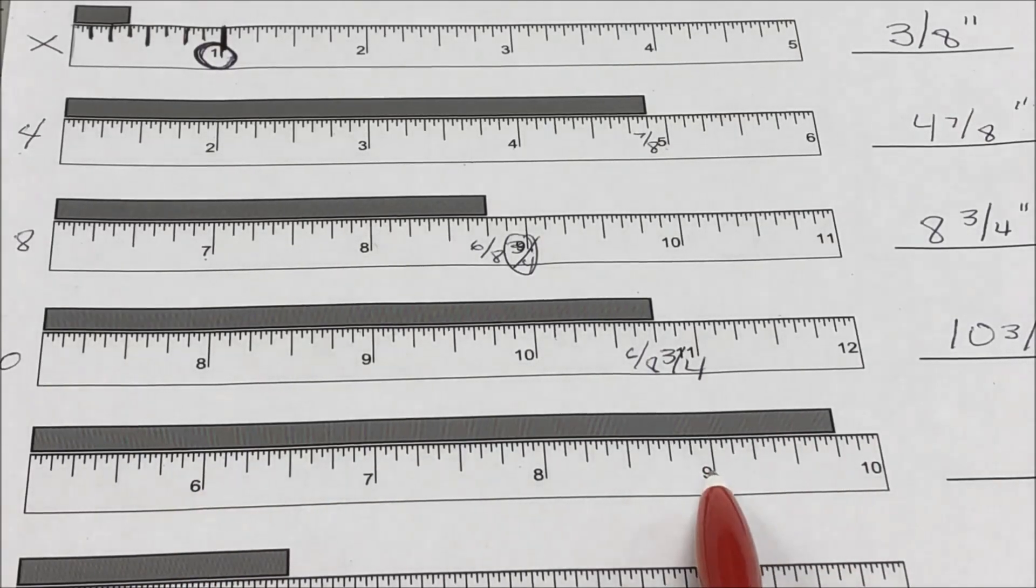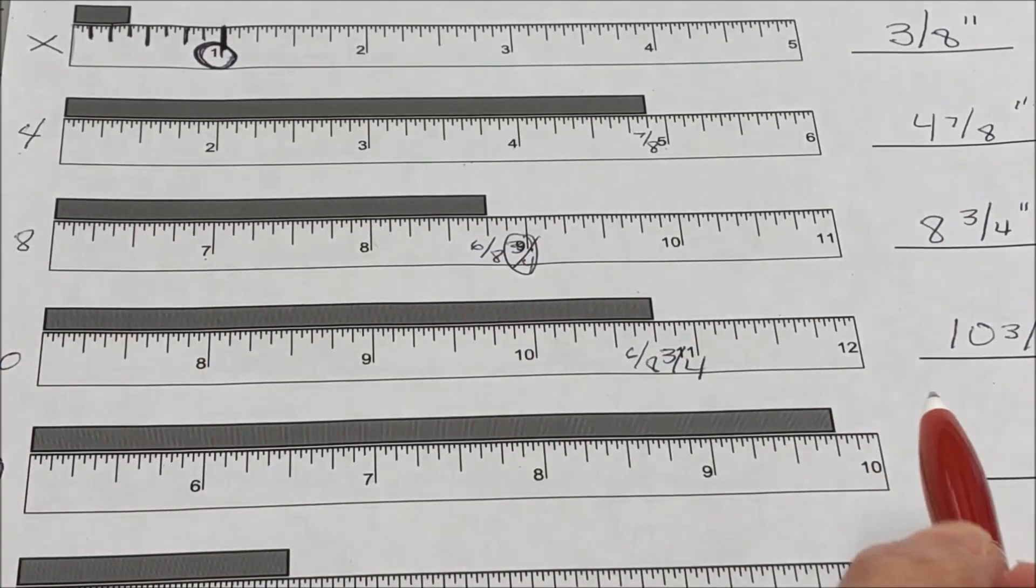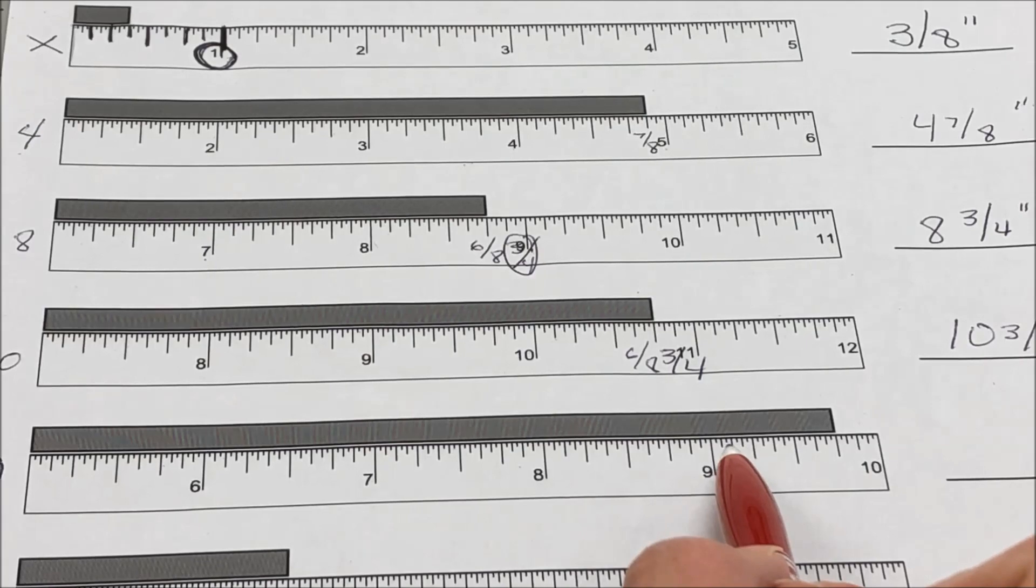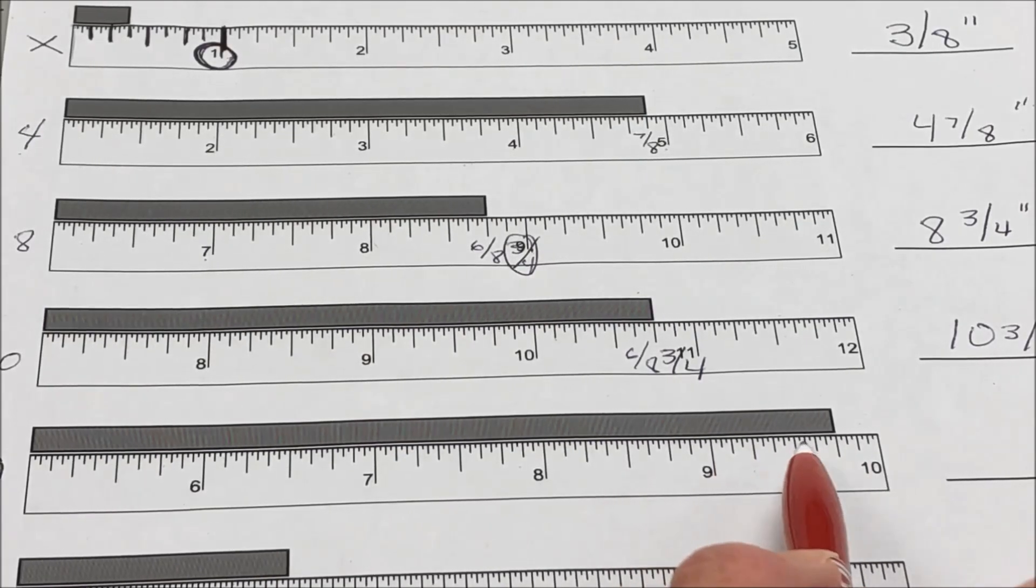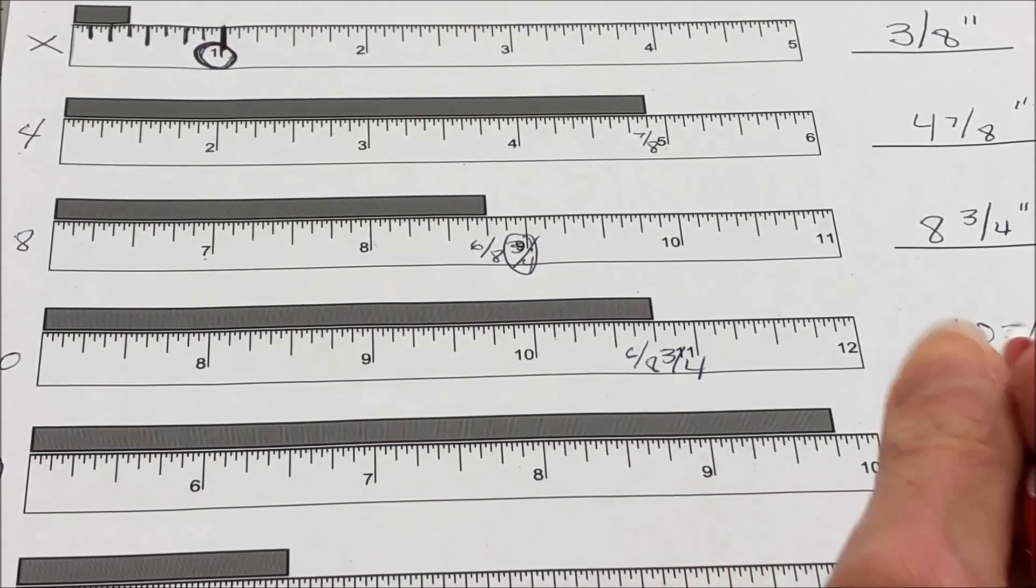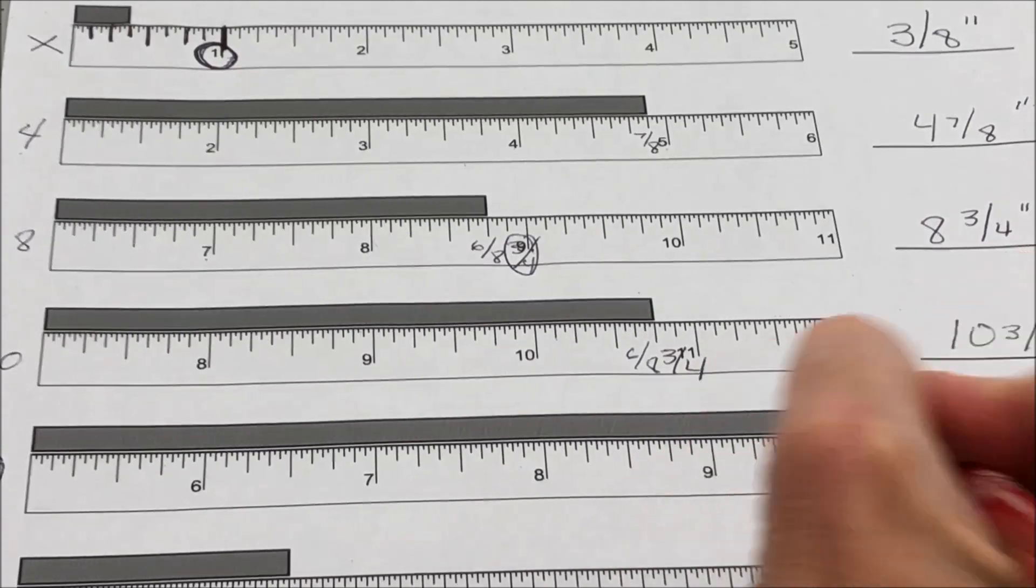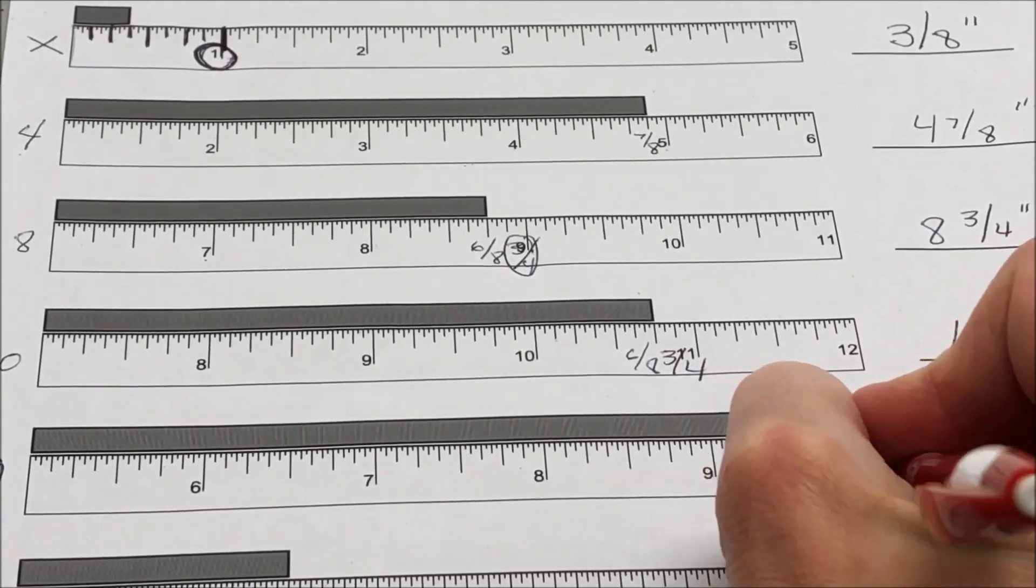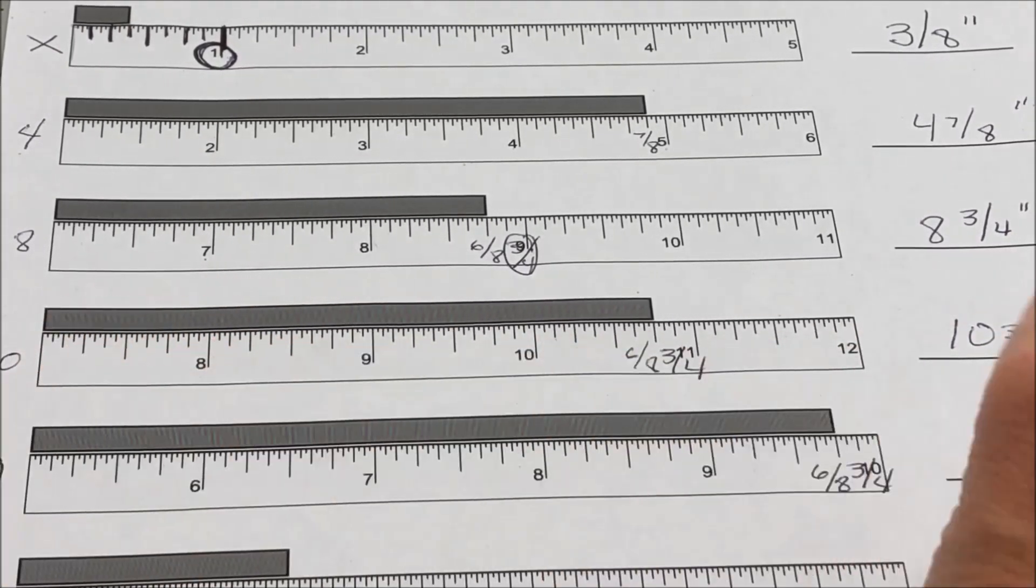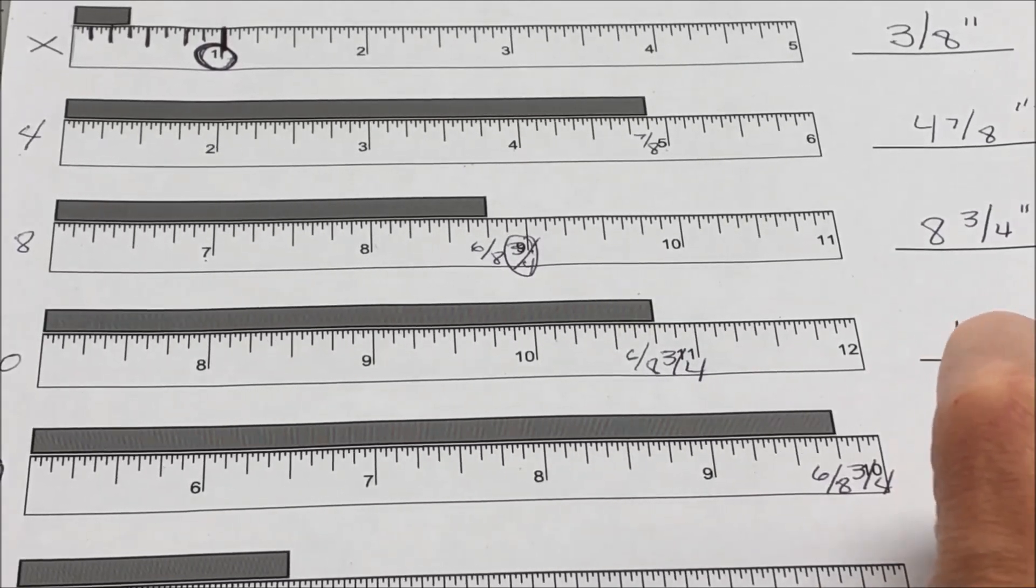This next one is going to start with a 9. And we've got an 8th, a quarter, 3/8ths, a half, 5/8ths, and 6/8ths again. So we still know 6/8ths is going to be 3/4ths. So this will be 9 and 3/4ths.